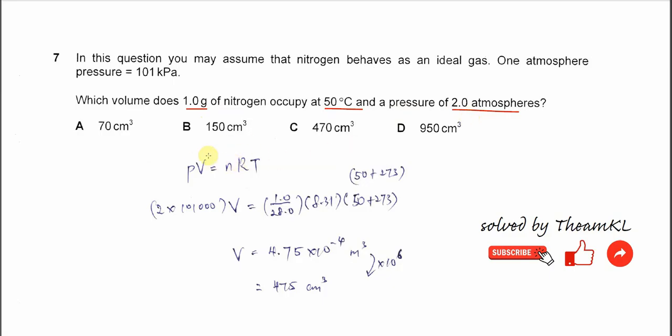This one we must use the combined gas law, PV equals nRT. Because it is asking which volume, we need to find V. We just substitute all the units, the standard units, into this combined gas law.